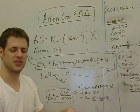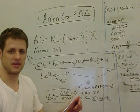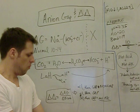So a non-gap acidosis, there is no extra ion floating around. Extra ions would be like lactic acid, ketones, aspirin. There's lots of things that can do it.